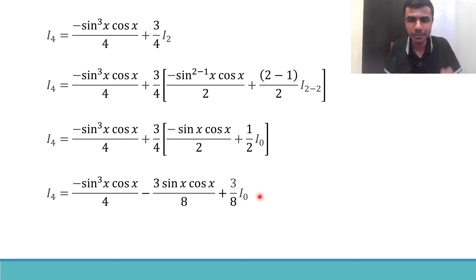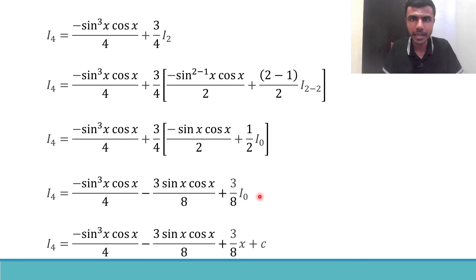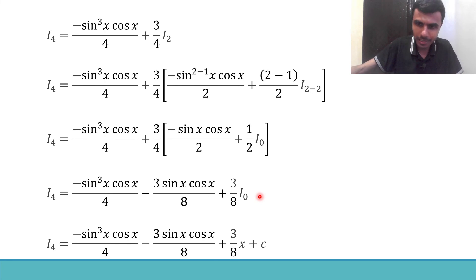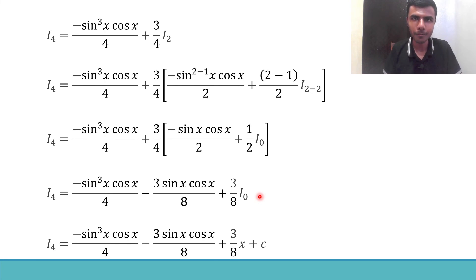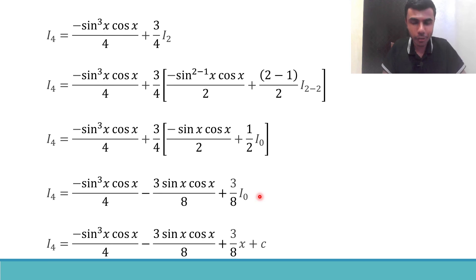What is I_0? I_0 = integral sin^0 x dx = integral 1 dx = x. So (3/8)·I_0 = (3/8)·x. Therefore, the final answer is: integral sin^4 x dx = −sin³x·cos x / 4 − 3·sin x·cos x / 8 + 3x/8 + C.